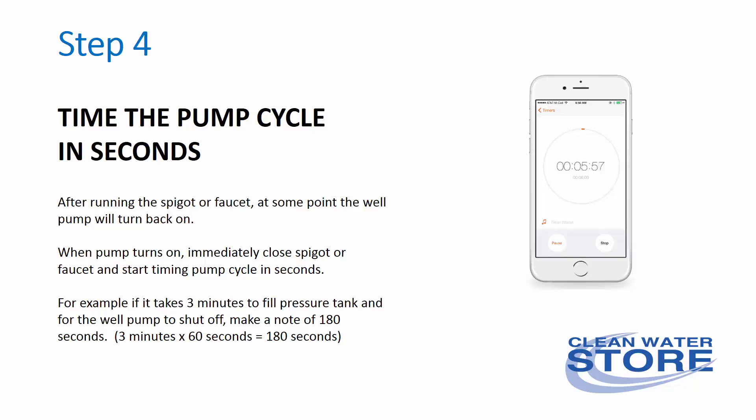Step 4: time the pump cycle in seconds. After running the spigot or faucet, at some point the well pump will turn back on. When the pump turns on, immediately close the spigot and start timing your pump cycle in seconds. For example, if it takes 3 minutes to fill your pressure tank, make a note of 180 seconds.